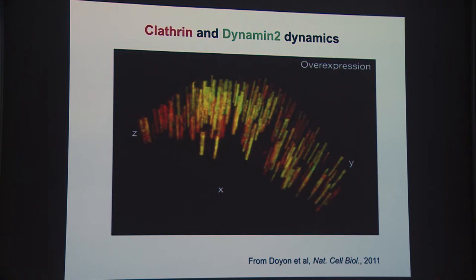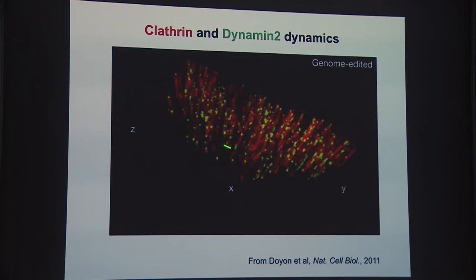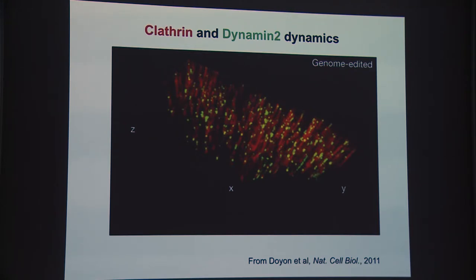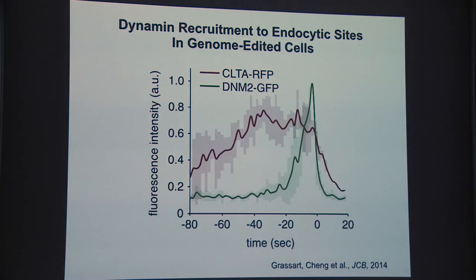But when you genome-edit the cells, you find a nice period when clathrin is assembling with primarily clathrin signal, and then the end of the process is punctuated when dynamin is recruited and vesicle scission occurs. We now have about 130 to 140 genome-edited lines in the lab with various proteins engineered, giving us more sensitivity to look at normal cells and detect effects of perturbations. You can also look at the average kinetics of clathrin and dynamin recruitment: clathrin largely comes first, there's a spike of dynamin, and the two disappear together when a vesicle forms.